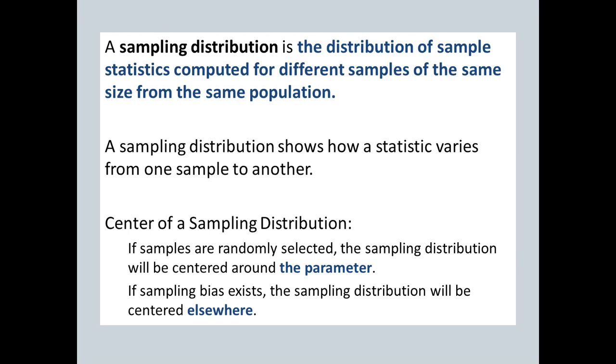However, if you have a bad sampling method, like a convenience sampling method, or a volunteer sampling method, then you're probably going to get biased results. You're probably going to get biased statistics. And if you have bias, generally what happens is your values are going to be consistently too high or consistently too low. And if that happens, respectively, the center of your sampling distribution will be either too high or too low.